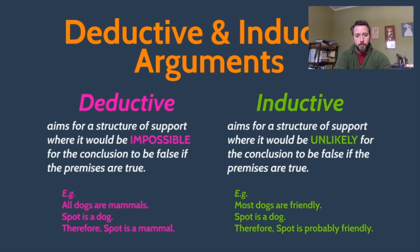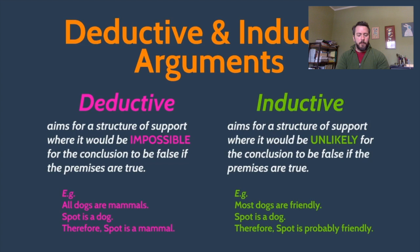We can see the shift from deduction to induction by comparing the two examples on the Prezi. The deductive argument said: All dogs are mammals. Spot is a dog. Therefore, Spot is a mammal. The inductive argument is: Most dogs are friendly. Spot is a dog. Therefore, Spot is probably friendly. The big difference is how they start — the first premise says 'all dogs are mammals,' while the second says 'most dogs are friendly.'